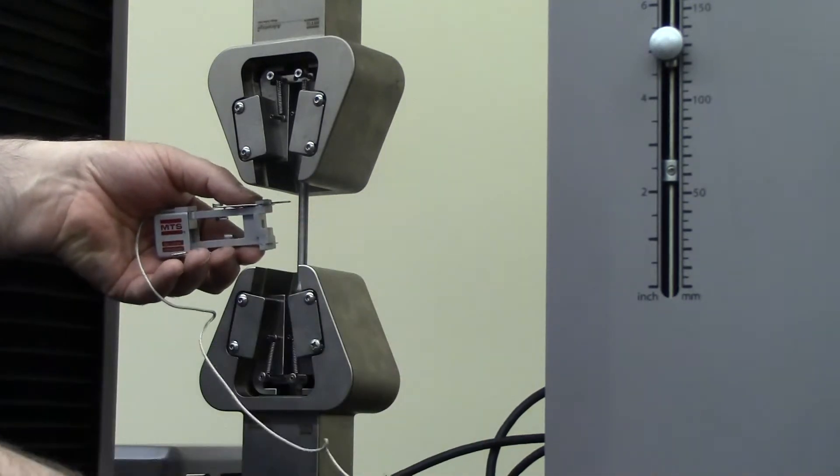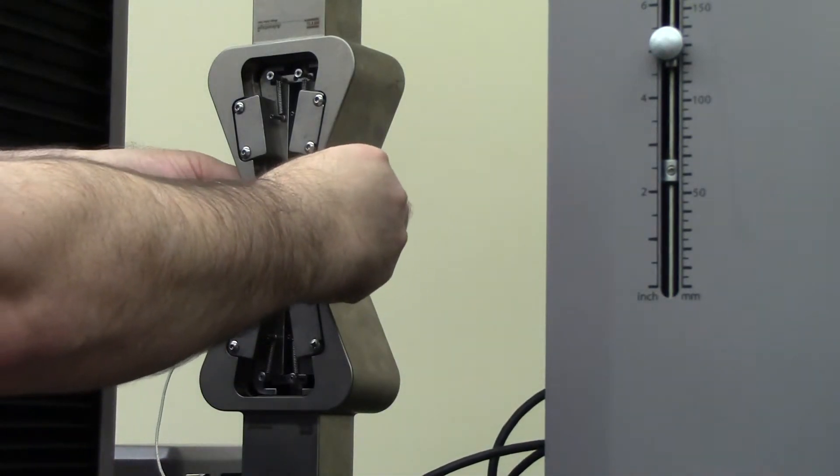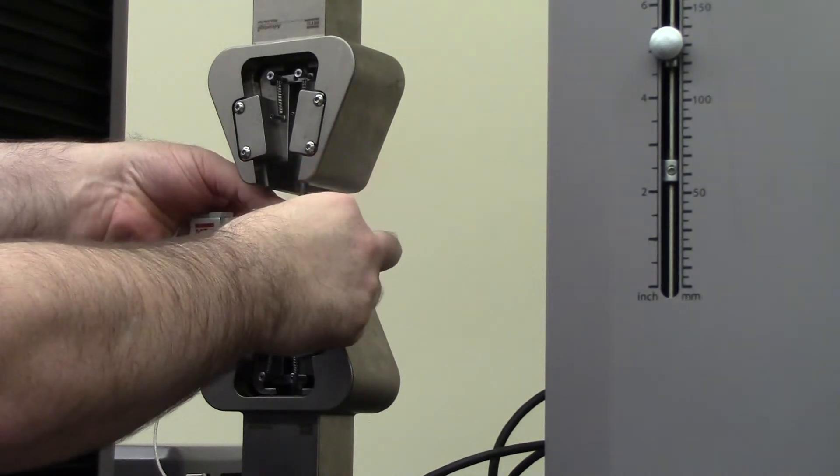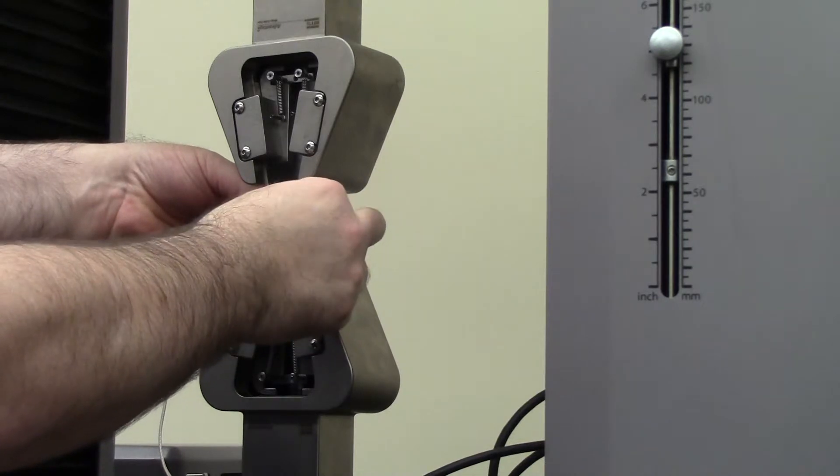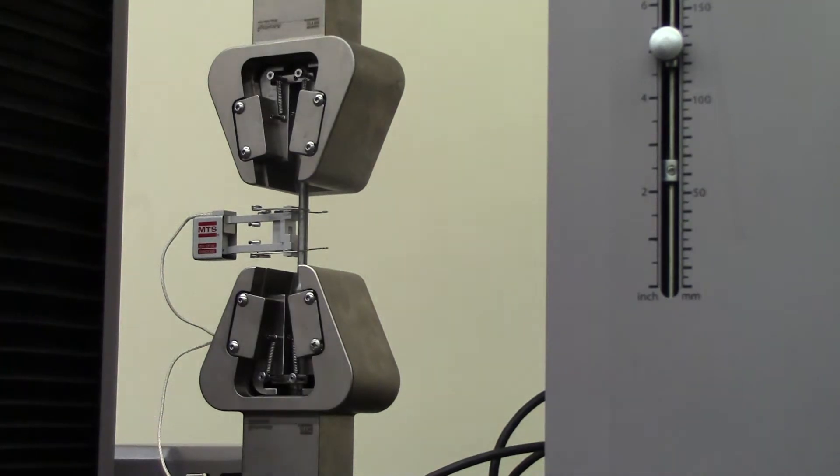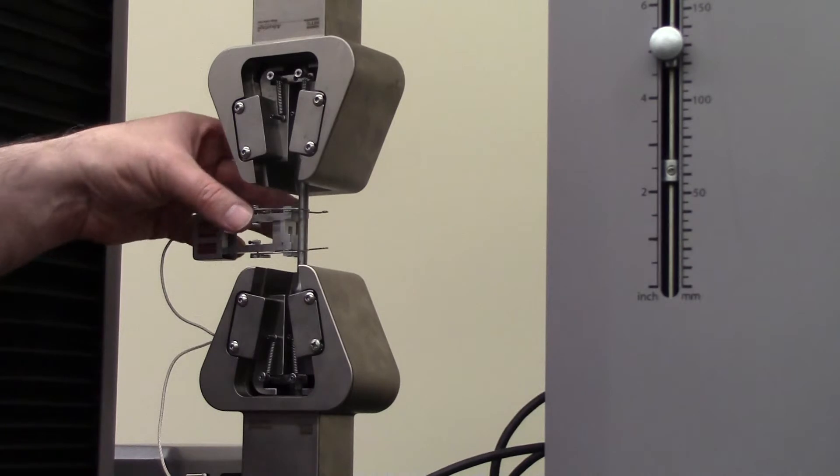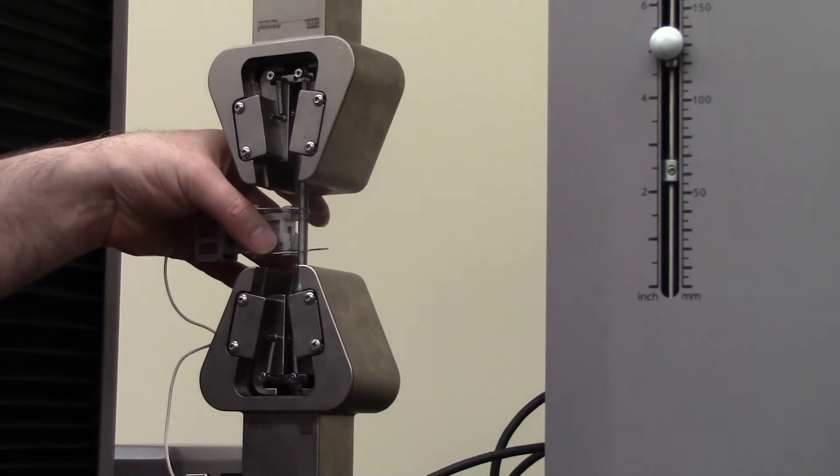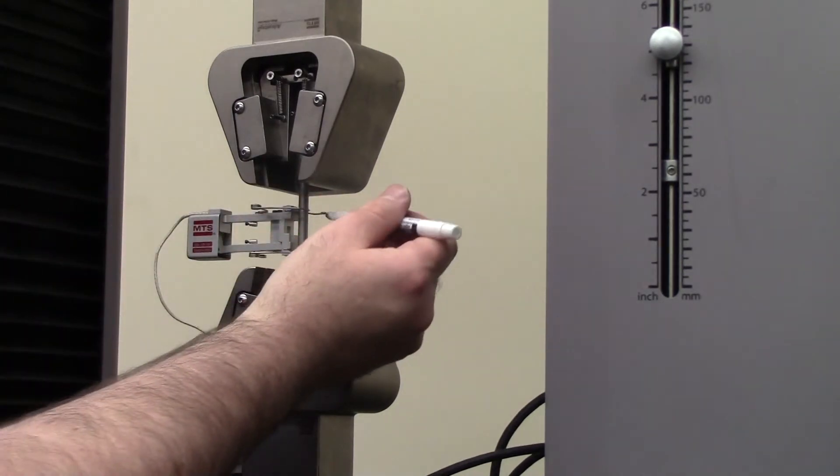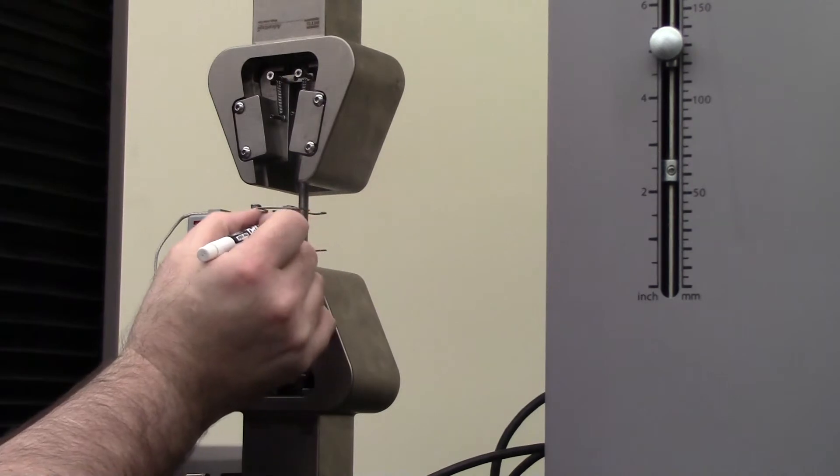So pinch it closed. These quick attach clips go around here. You want to make sure the extensometer is kind of in the middle of the specimen, that it's not tilted, straight up and down. The blade should also be in the middle. We have a marker, and we're going to mark the position of the blades. That will be one inch. The students are going to measure the elongation based on these marks after the test.